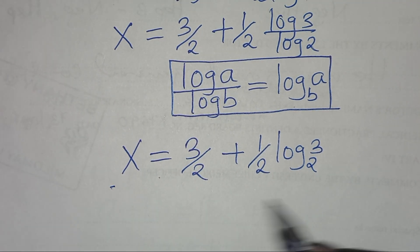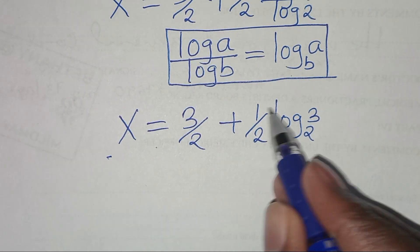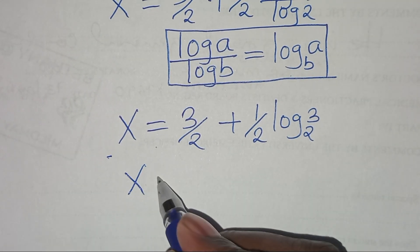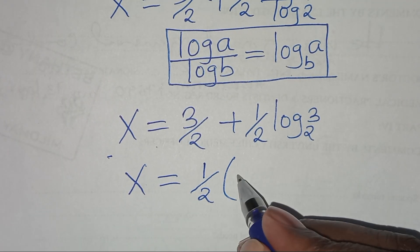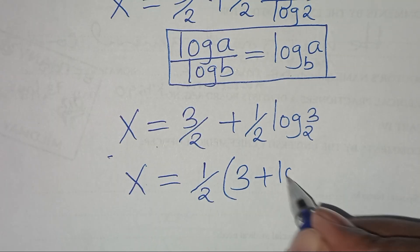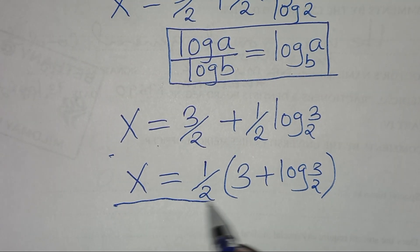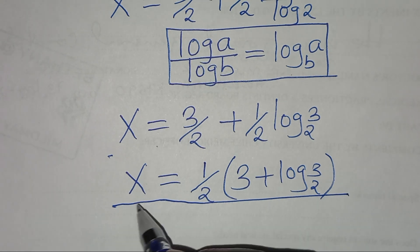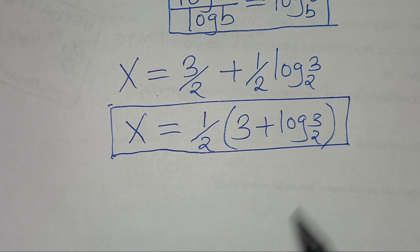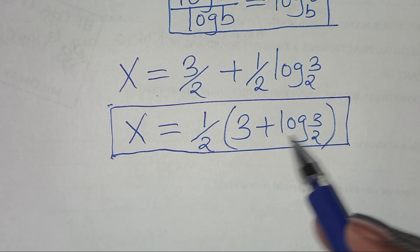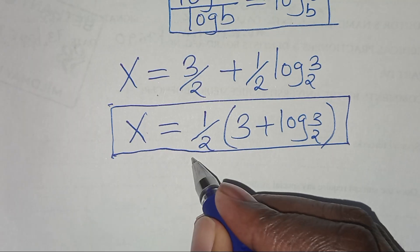So this is the value of x. Since one half is common, we can express x as one half times the quantity (3 plus log₂3). This is the value of x. The next step is to verify that this value of x satisfies the original equation.